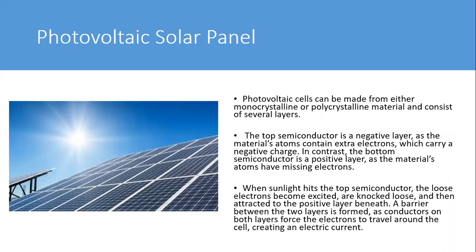Photovoltaic solar cells can be made from either monocrystalline or polycrystalline material and consist of several layers. The semiconductors in the middle of the layers are really important. The top semiconductor is a negative layer and the bottom semiconductor is a positive layer. When sunlight hits the top semiconductor layer, the electrons become excited and attracted to the positive semiconductor layer. As conductors on both layers force the electrons to travel around the cell, it creates an electrical current.